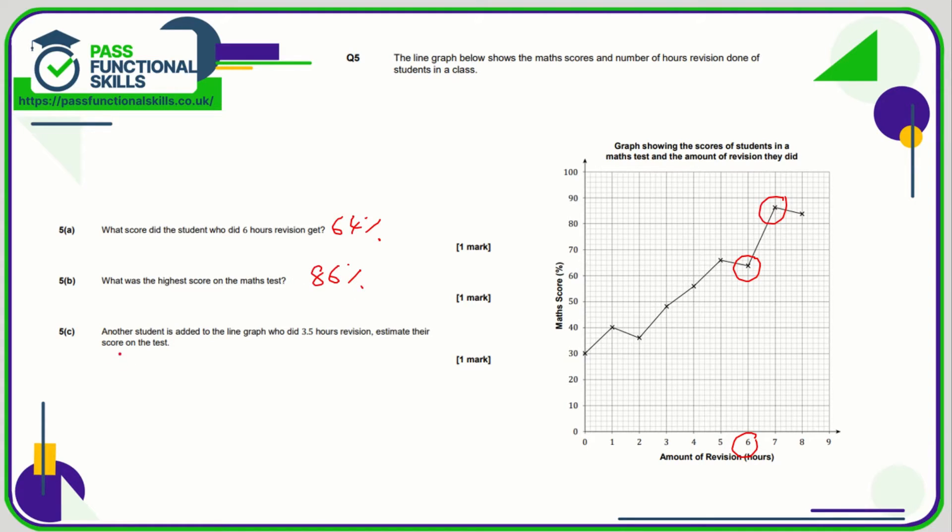Another student is added to the line graph who did three and a half hours of revision. Estimate their score on the test. That's a bit of an unusual question here, given that the line goes up and down. But all we can do is just assume that three and a half hours would correspond to this point on the line here, which is the line above 50. So we can just say approximately 52 percent. I'm sure in the mark scheme plus or minus a percent won't be a problem. Plus it is only an estimate after all.